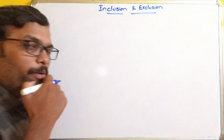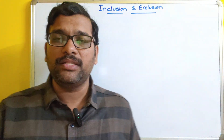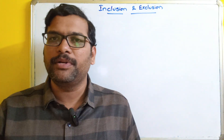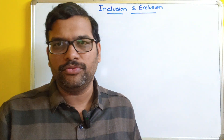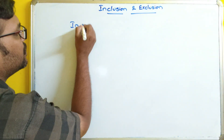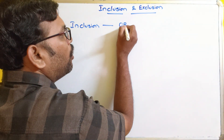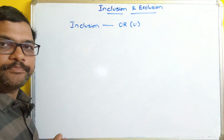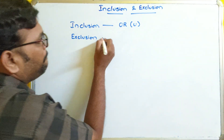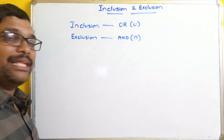Before going to the problems, we will see two formulas. With the help of these two formulas, we are supposed to solve any kind of problems in inclusion and exclusion. The first thing to remember: inclusion means OR operation, which is a union operation. Similarly, exclusion means AND operation, which is represented with intersection.